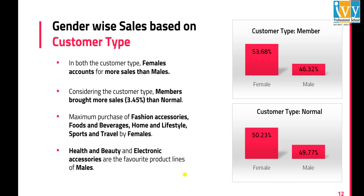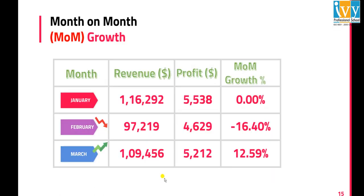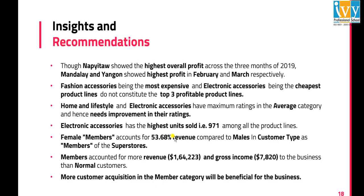Regarding gender-wise sales by customer type, females account for more sales than males in both customer categories, and members brought in more sales than normal customers. For month-on-month growth, February had a downward trend with negative MOM growth, March shows an upward trend compared to February, and January is the highest profit month.